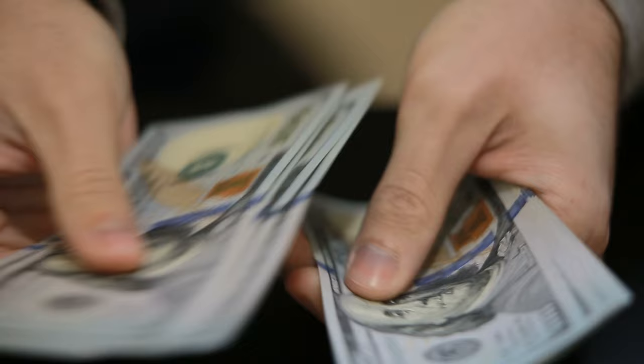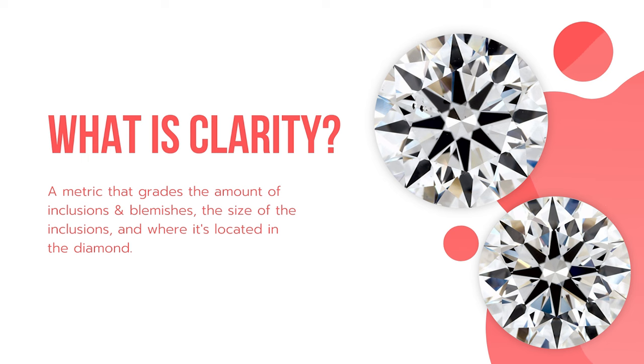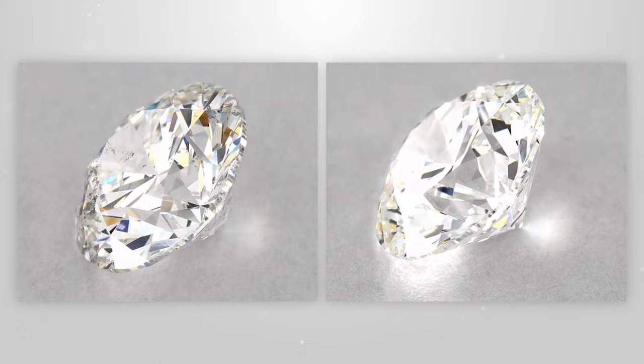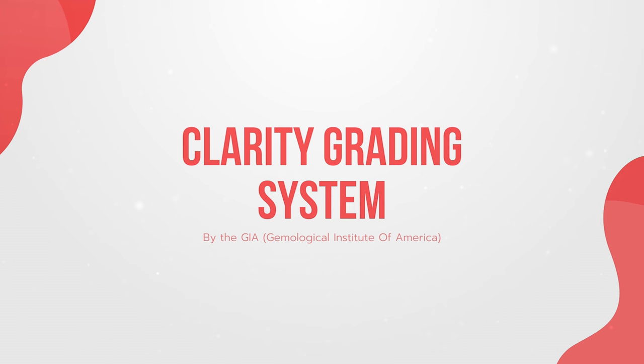In short, diamond clarity is a metric that grades the amount of inclusions and blemishes, the size of the inclusions, and where they are located in the diamond. In other words, how the flaws affect the total appearance of the diamond. Clear stones without any visible birthmarks are extremely rare, which leads to a significantly higher price. Most of the diamond industry follows the GIA clarity scale. We'll cover it from best to worst, separated into five groups so it's easier to understand.